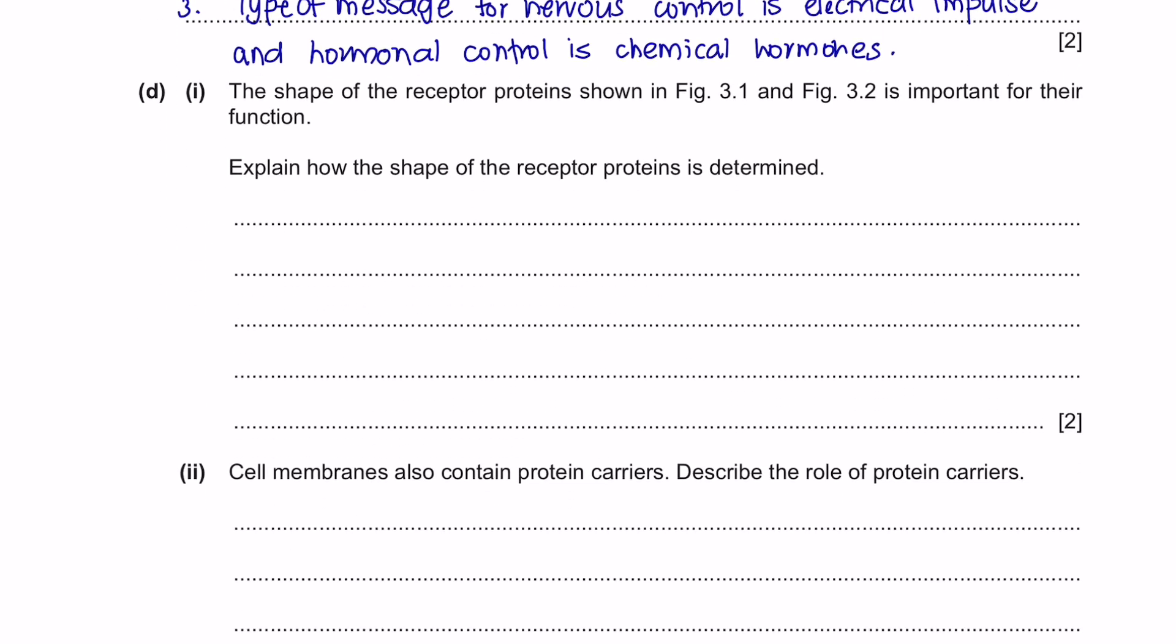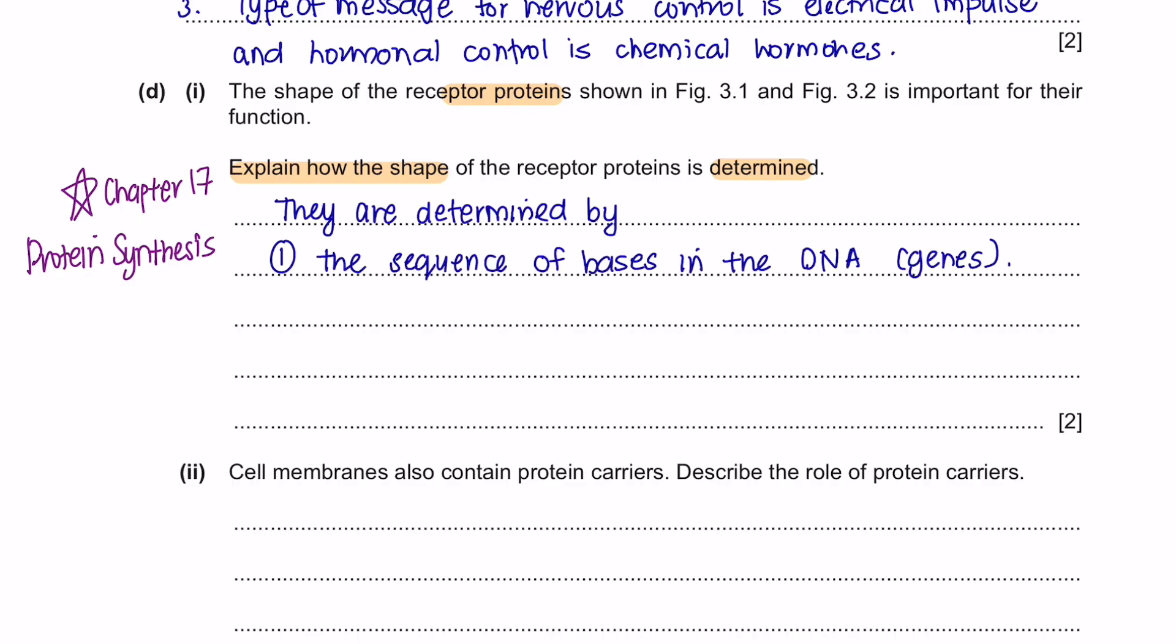Next question D. Part 1. The shape of the receptor proteins, shown in figure 3.1 and figure 3.2, is important for their function. Explain how the shape of the receptor proteins is determined. To answer this, you must have a strong understanding of your Chapter 17, Protein Synthesis. In this chapter, you will learn how the shape of receptor proteins are determined. They are determined by the sequence of bases in the DNA or mRNA. Each bases of the codes are for a specific amino acid. So the sequence of amino acid will determine the shape of receptor protein.